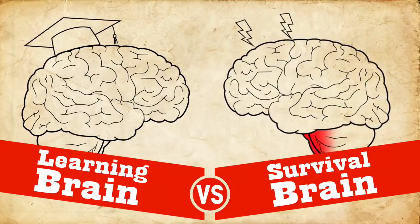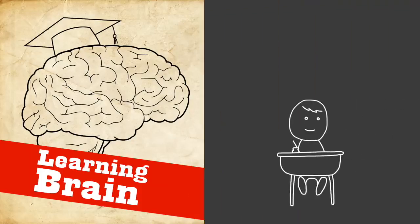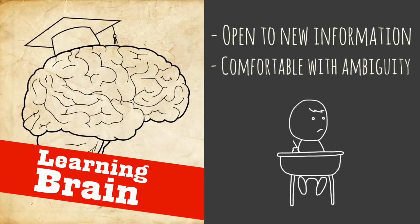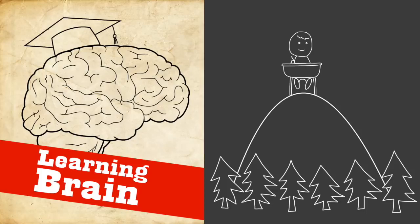And this is the difference. So learning brain is this brain that's open to learning new information and it's completely okay with ambiguity and grayness and vagueness and it sees the big picture. It pulls back and is on the balcony, can look over the forest and figure out what's going on.